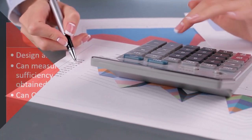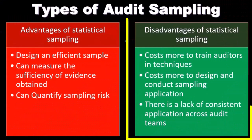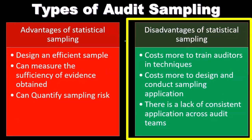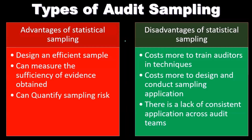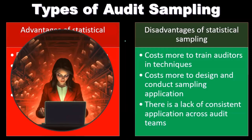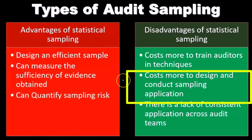You might ask: why wouldn't we always use statistical sampling? Well, it costs more to train auditors in statistical techniques. Statistics isn't the easiest thing to apply, and just like with polling and other applications, there are potential problems in statistical sampling that we need to be aware of when we apply it to whatever type of sample we are testing.